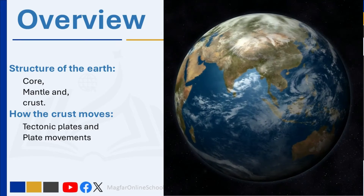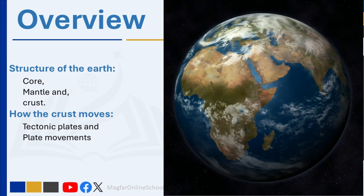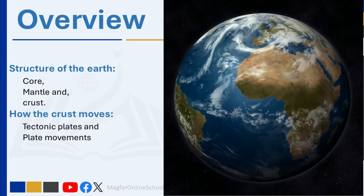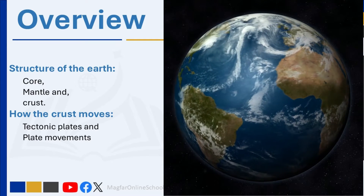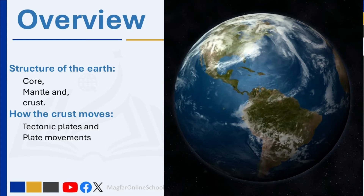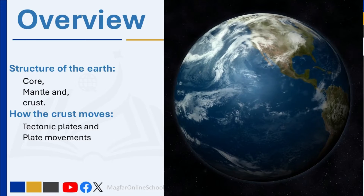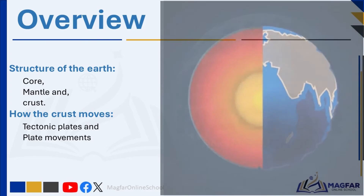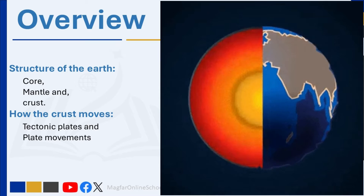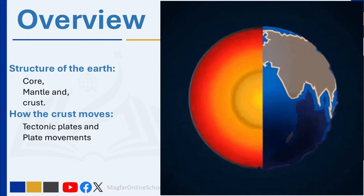Structure is the way in which different parts are put together to make something. Earth is the only planet that has liquid water on its surface. Imagine Earth as a giant apple. We live on the thin outermost peel — that's the crust. But beneath our feet lies a whole hidden world, made up of different layers, each with its own unique characteristics. We are going to take a journey down and explore the Earth's structure.